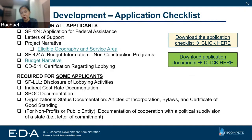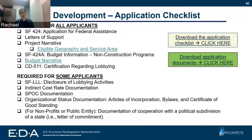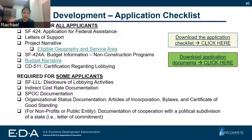We've put two links on our website that summarize this list in more detail. The first link, 'download the application checklist,' takes you to a table that lays out all of these requirements and a description of them, as well as where to find out whether they apply to you. The second link, 'download application documents,' will help you download a zip file that includes templates for each of these where applicable. Highly recommend working through these almost like a workbook.